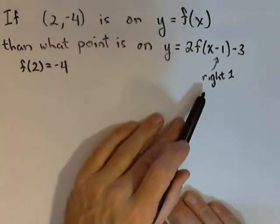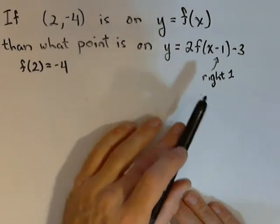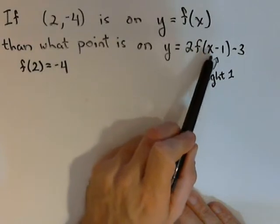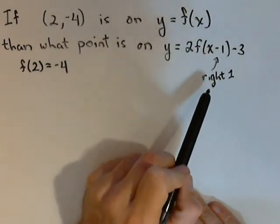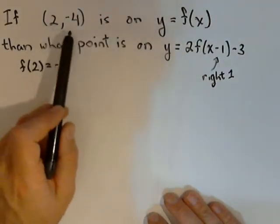So we know we're going right one unit. Now we want to see if there's any other horizontal shifts, or translations, or reflections. And what we see is there's nothing else being done on the input. So this is really the only thing that's going to be done on the input, is it's going to be moved right one.